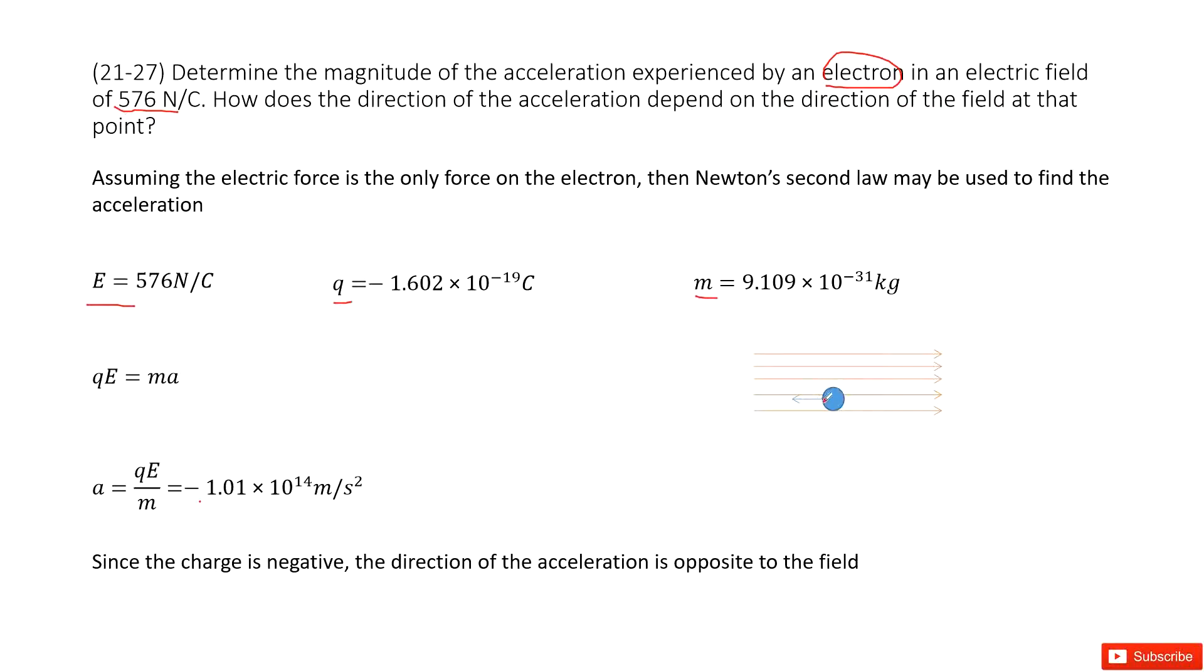Now how does the direction of acceleration depend on the direction of field at the point? You can see the acceleration pointing to the left and electrical field is pointing to the right. Opposite direction is because the electron carries negative charge.